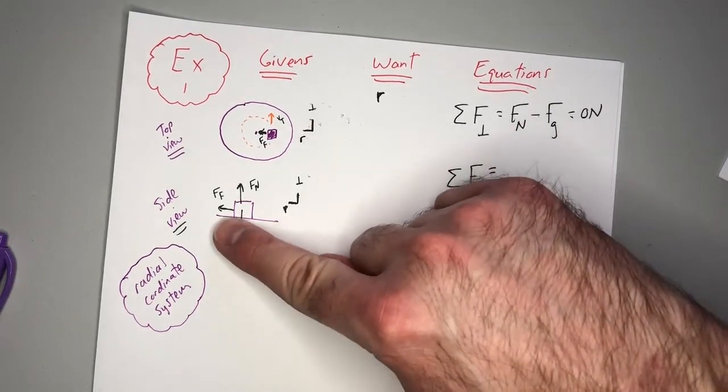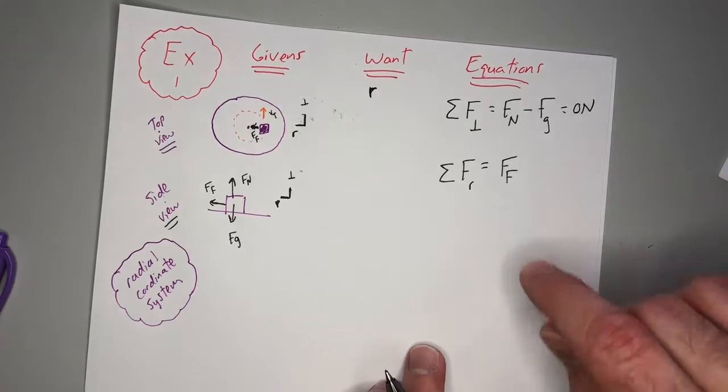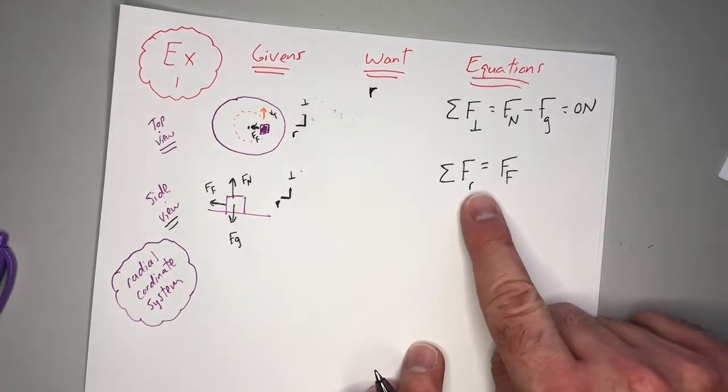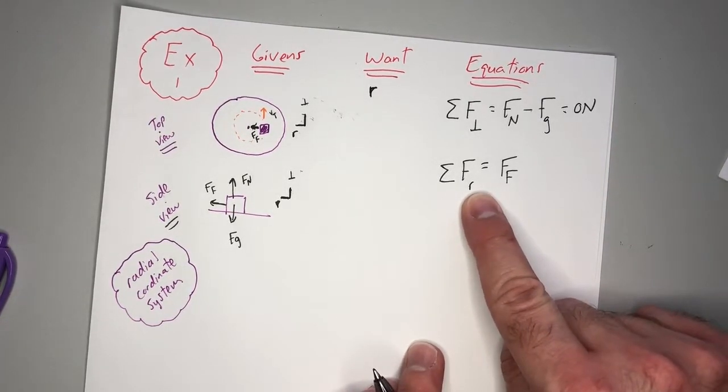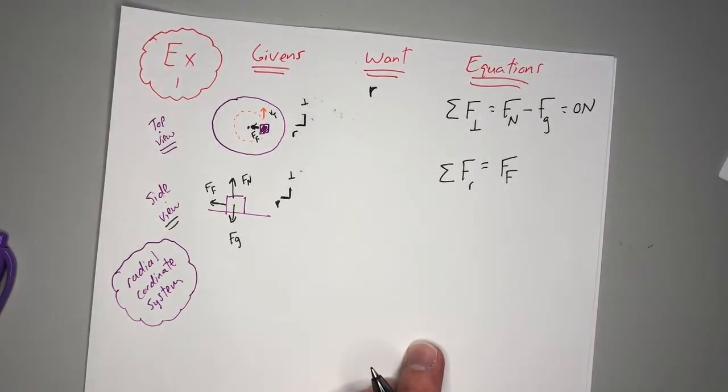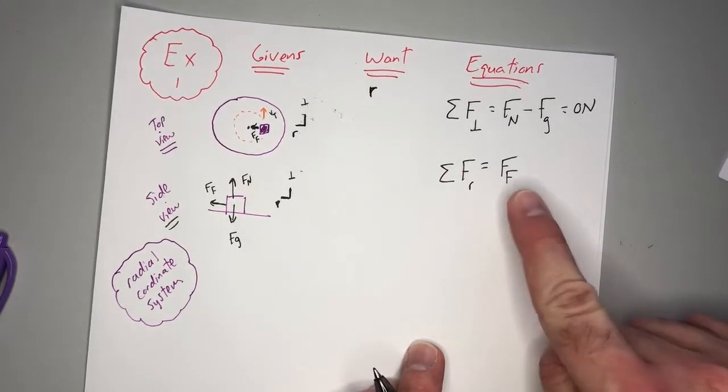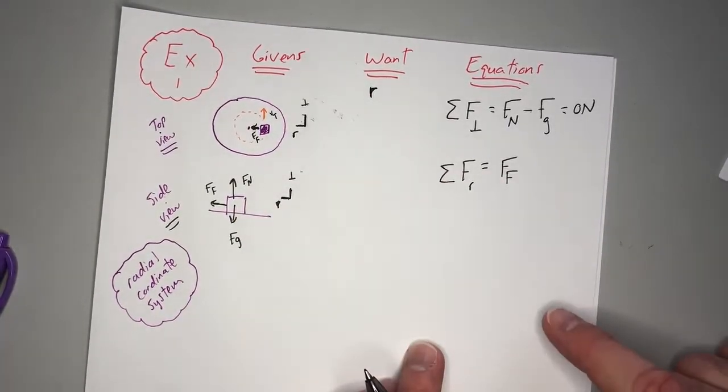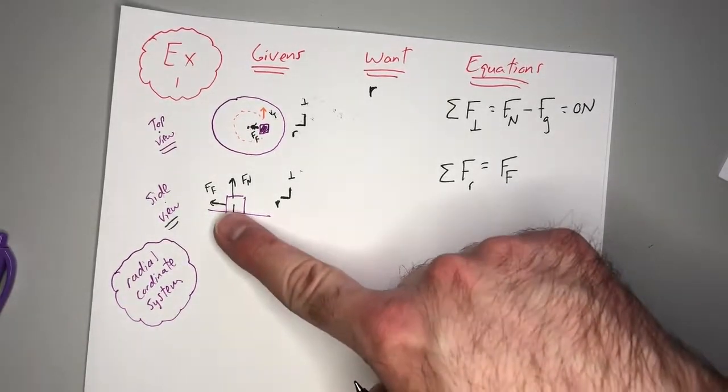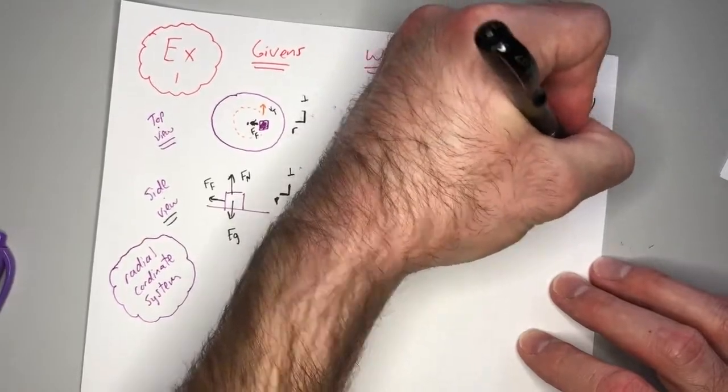In the radial direction, you have one force. It's the force of friction and that's acting as your centripetal force. A lot of people actually call this your sum of your forces in the centripetal direction. Don't let that throw you for a loop. That's just another way to say radial, centripetal, along the radius. Some textbooks use sum of the forces in the centripetal direction. It's any force acting along the radius. So the only force acting along the radius in this case is the force of friction and we have nothing else to add up. So we just set that equal to m times a.